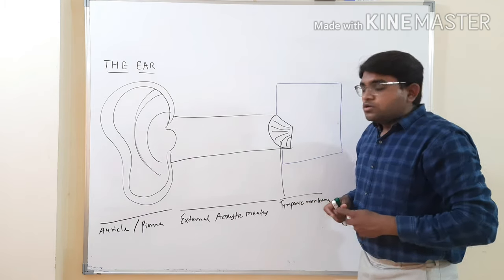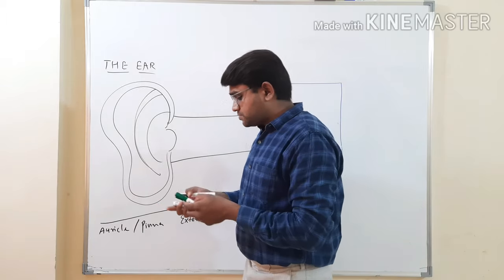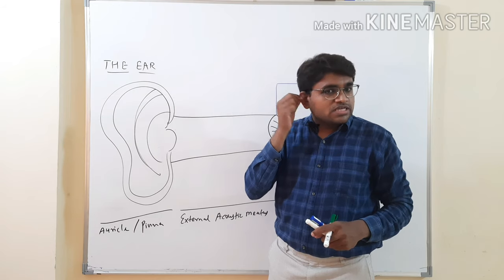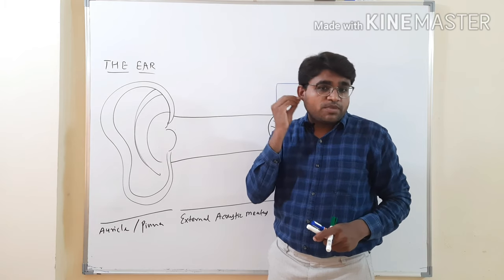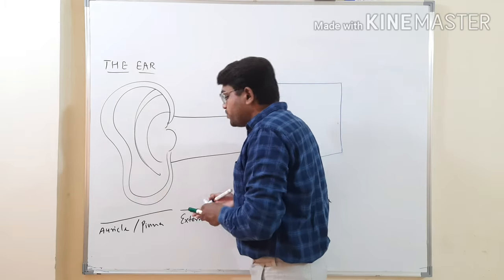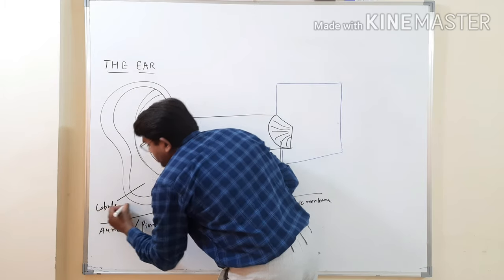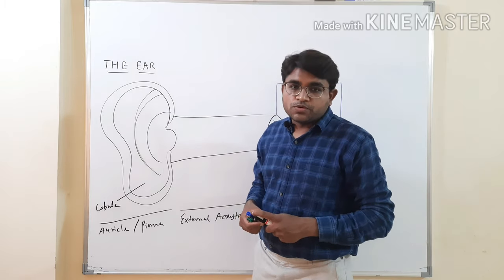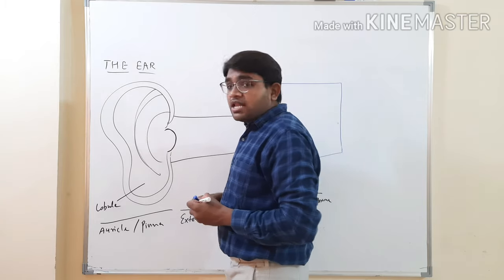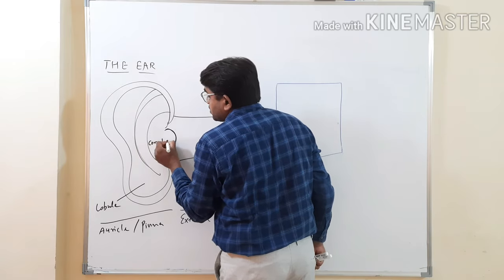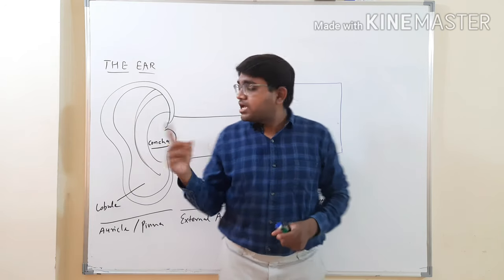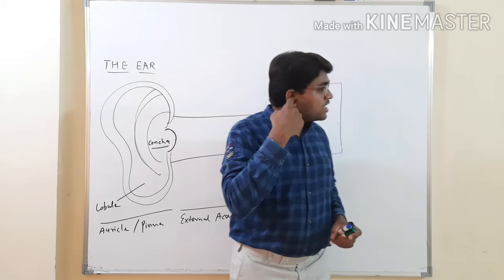The auricle or pinna is formed by elastic cartilage and is covered on both sides by skin. Its lowest part is not formed by cartilage — it is a fibro-fatty part known as the lobule. There is one large depressed area in the auricle known as the concha, and this depressed area is continuous with the external acoustic meatus.